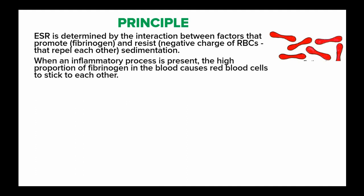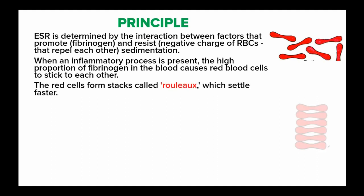When an inflammatory process is present, the high proportion of fibrinogen in blood causes the red blood cells to stick to each other. These red blood cells form stacks known as rouleaux, which then settle faster.